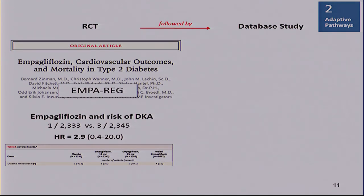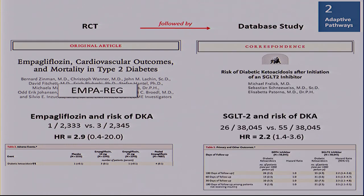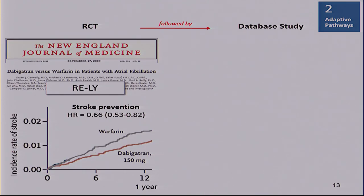EMPA-REG, the randomized trial of empagliflozin on cardiovascular endpoints, had seen a safety signal for diabetic ketoacidosis tripling in risk. But look at the small numbers — one out of 2,000 and three out of 2,000 patients with wide confidence limits. This is another use case where the database study followed the RCT. The point estimate is very similar, but now the confidence limits are much tighter because the sample size is much larger: now 26 out of 38,000 patients.